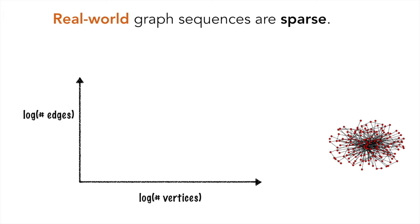real-life graph sequences tend to be sparse. That is, the number of edges grows sub-quadratically with the number of vertices.